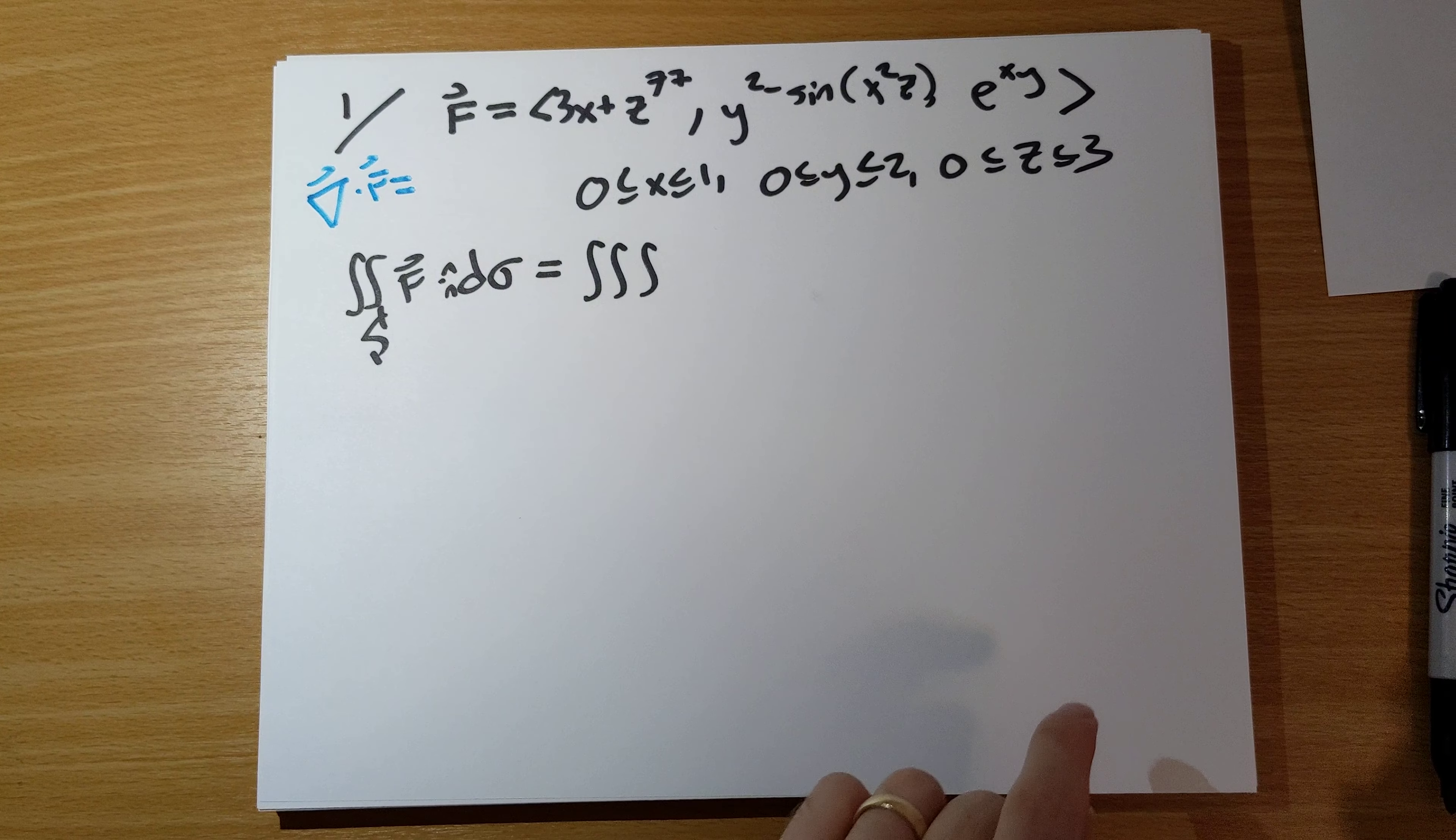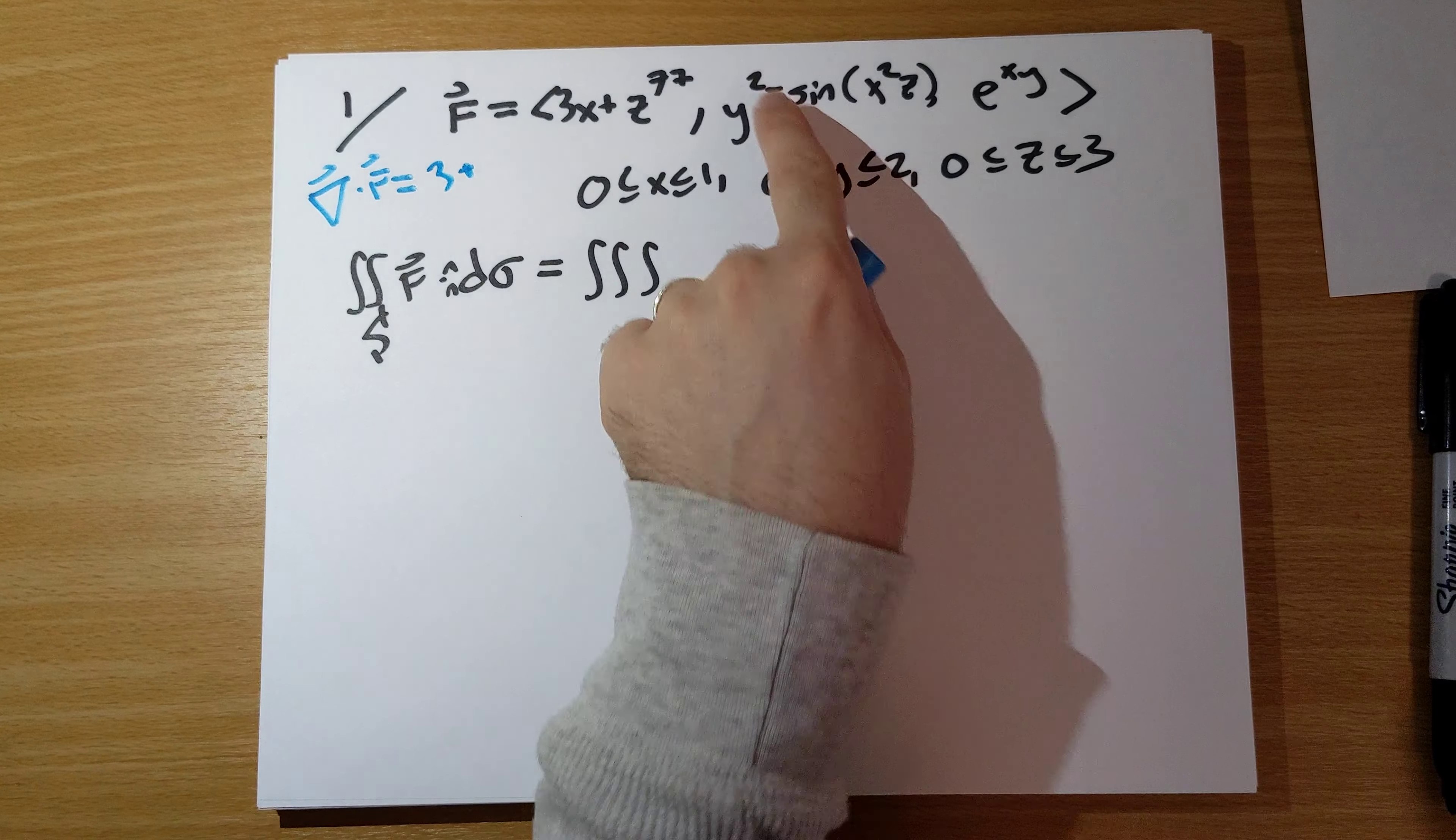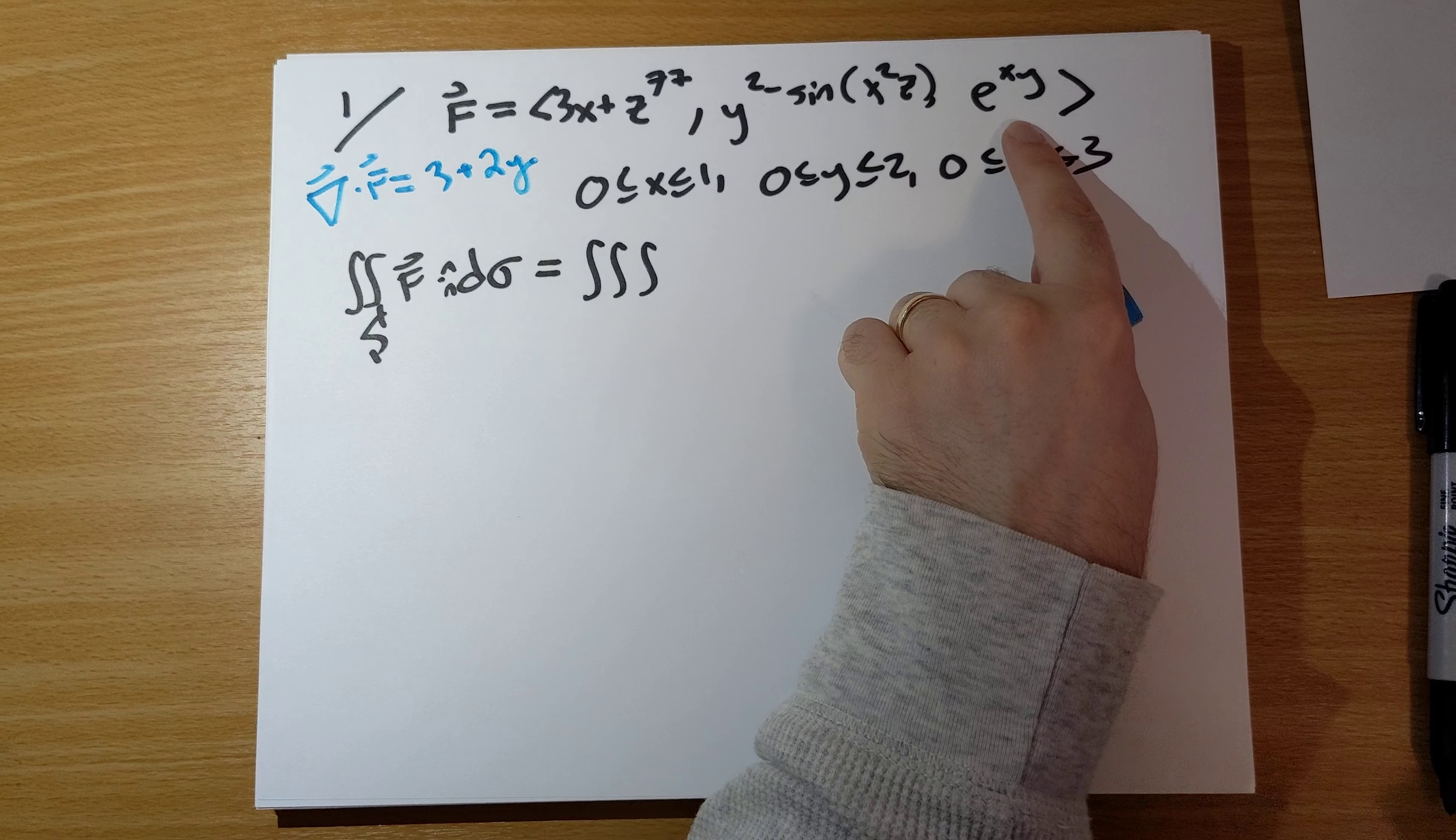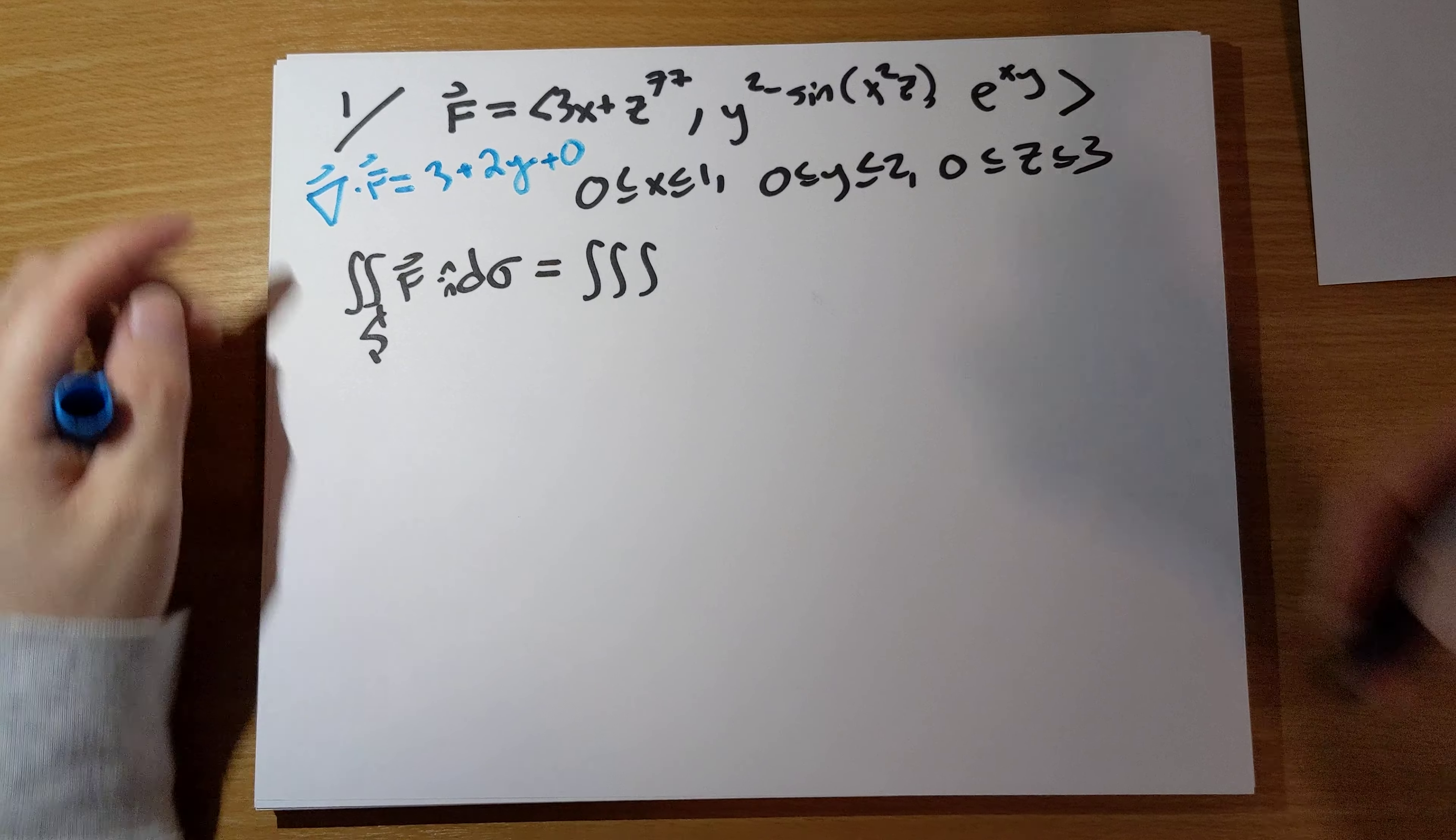The divergence of f is equal to the partial derivative of this with respect to x is 3 plus the partial derivative of this with respect to y is 2y plus the partial derivative of this with respect to z, that's 0. And then we just add up the three partial derivatives here.